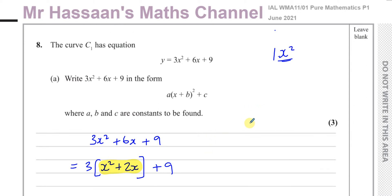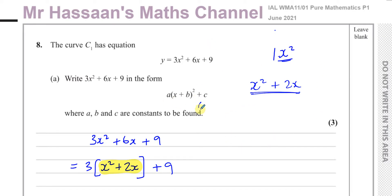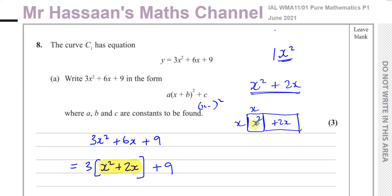Here's a visual way to think about it. If you have x squared plus 2x and want to complete the square, think of making an actual square. You have a square of area x squared, with sides of length x. Then you add a rectangle of area 2x attached to it, so that rectangle has a length of 2 because x times 2 equals 2x.